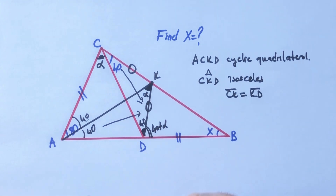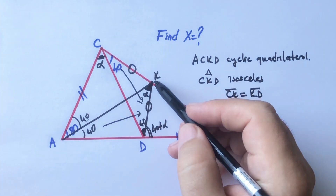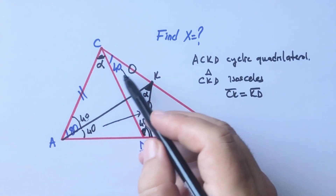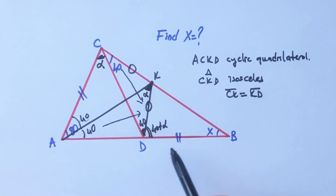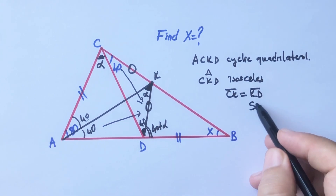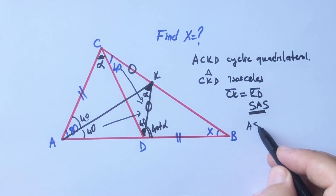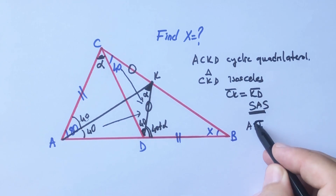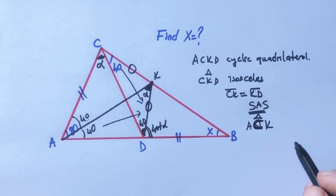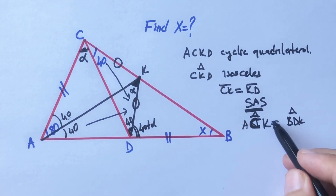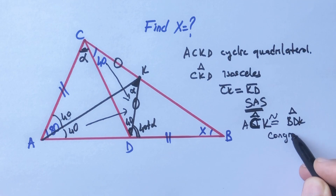Now if you compare triangle ACK and triangle DKB — the sides and angle alpha plus 40 match up — so according to the Side-Angle-Side criterion, these two triangles are congruent. Triangle ACK and triangle BDK are congruent.